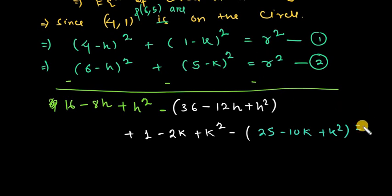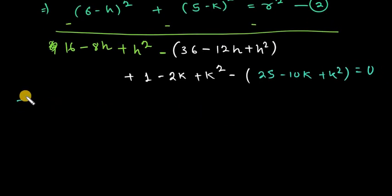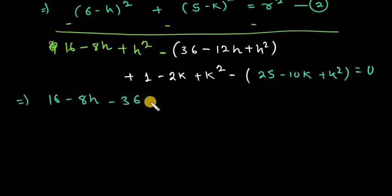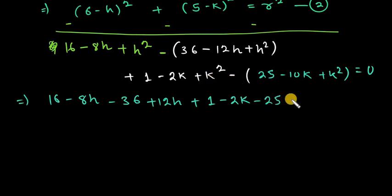The right-hand side gives r square minus r square equal to 0. Simplifying: h square and k square terms cancel. We get 16 minus 8h, then minus 36, then minus 12h, then plus 1 minus 2k, then minus 25 plus 10k, equal to 0.